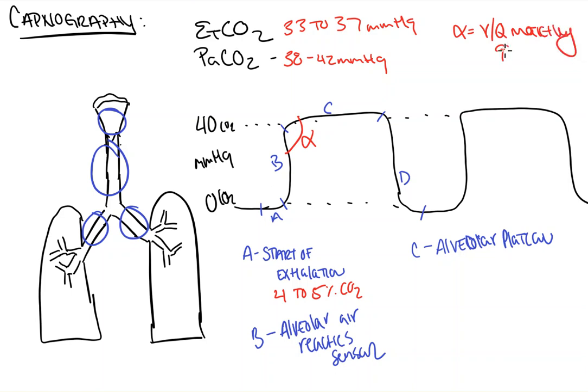In a normal patient, the angle will be 90 degrees, but in patients with VQ mismatches, it will actually be greater than 90 degrees, as you'll see in patients with COPD and asthma exacerbations. Again, that will be explored in a later video.